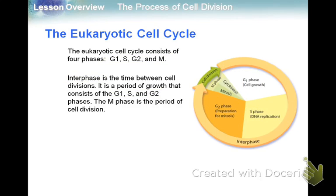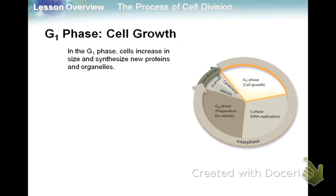The M phase is the period of cell division. Relatively speaking, it's a pretty small part of the cell cycle when the cell is actually dividing. You need to know the main things that go on in each of these phases.